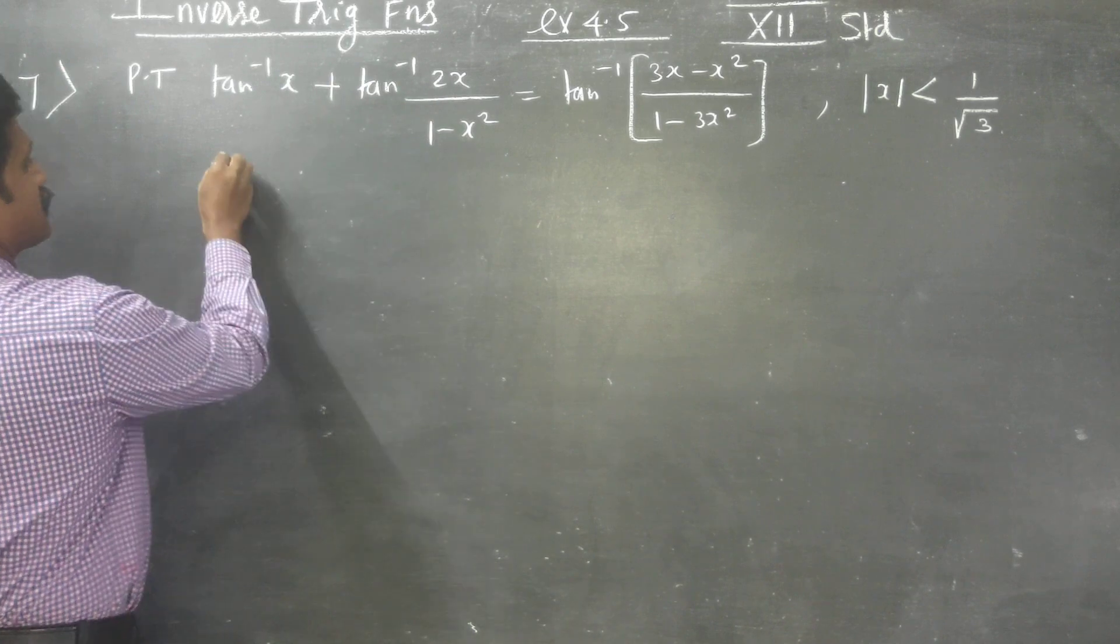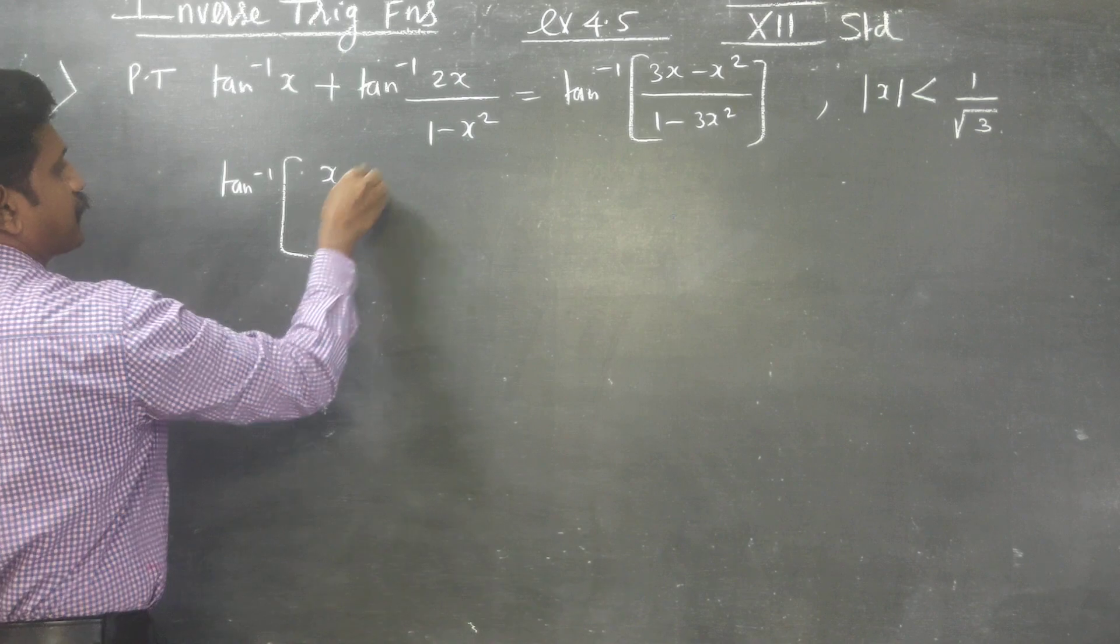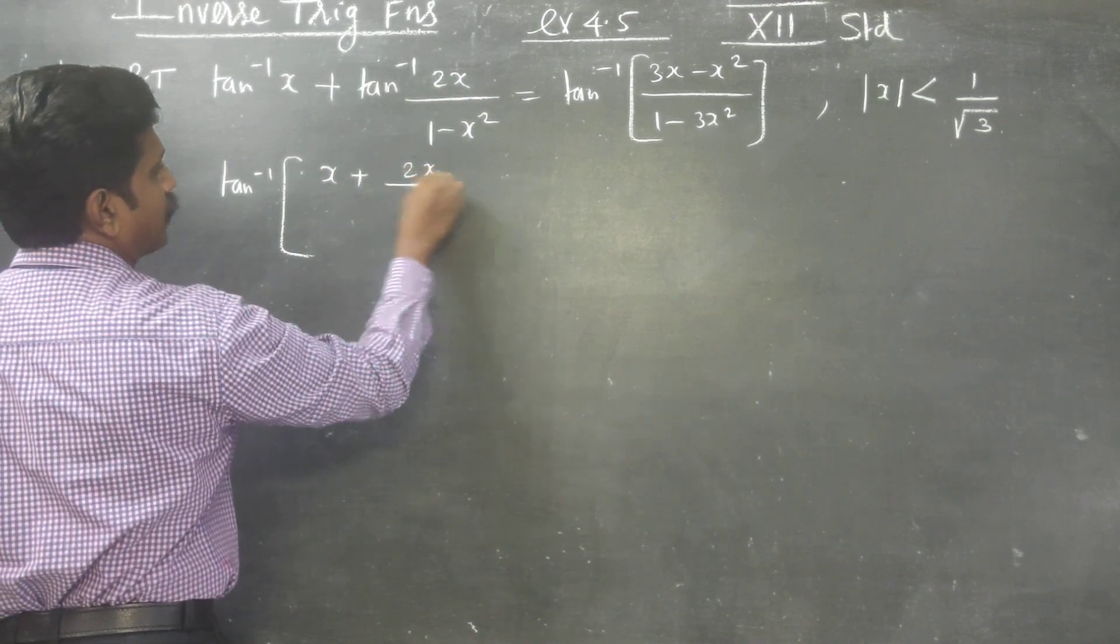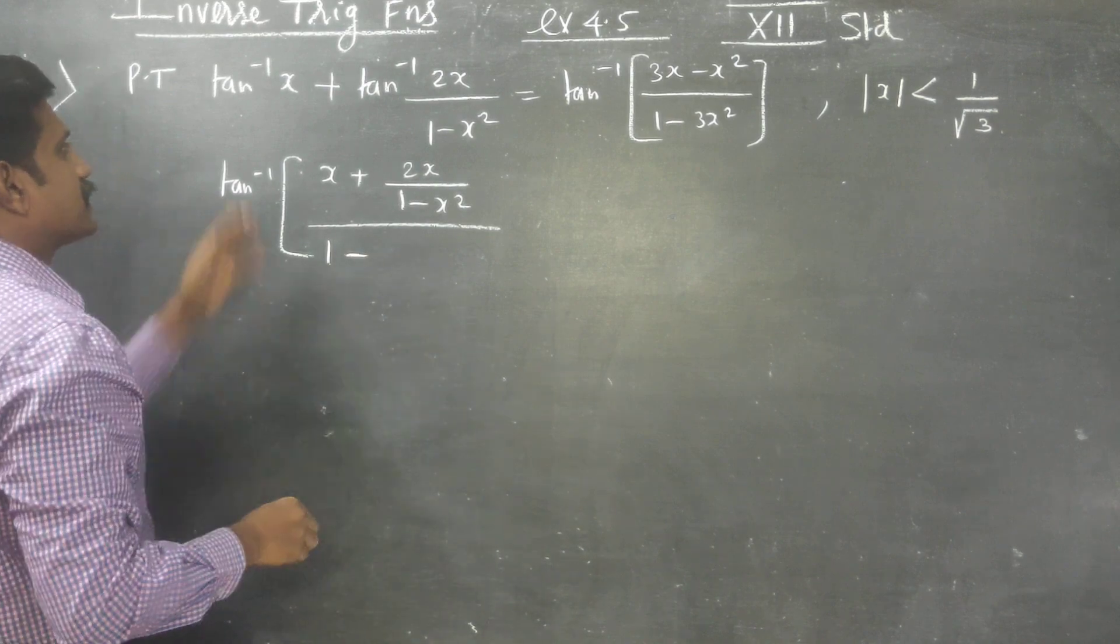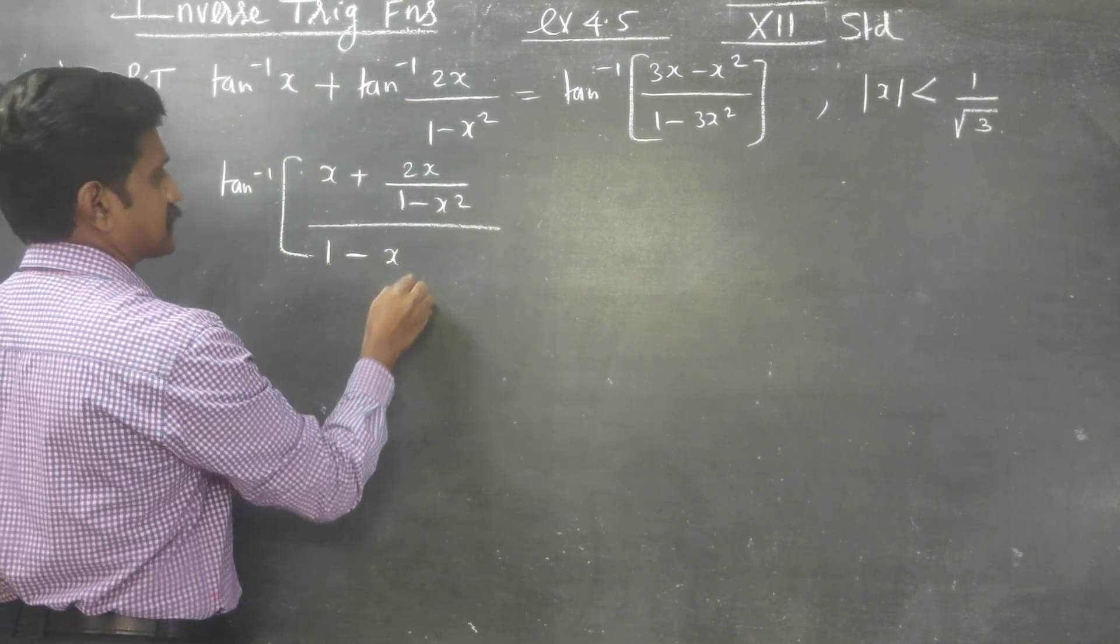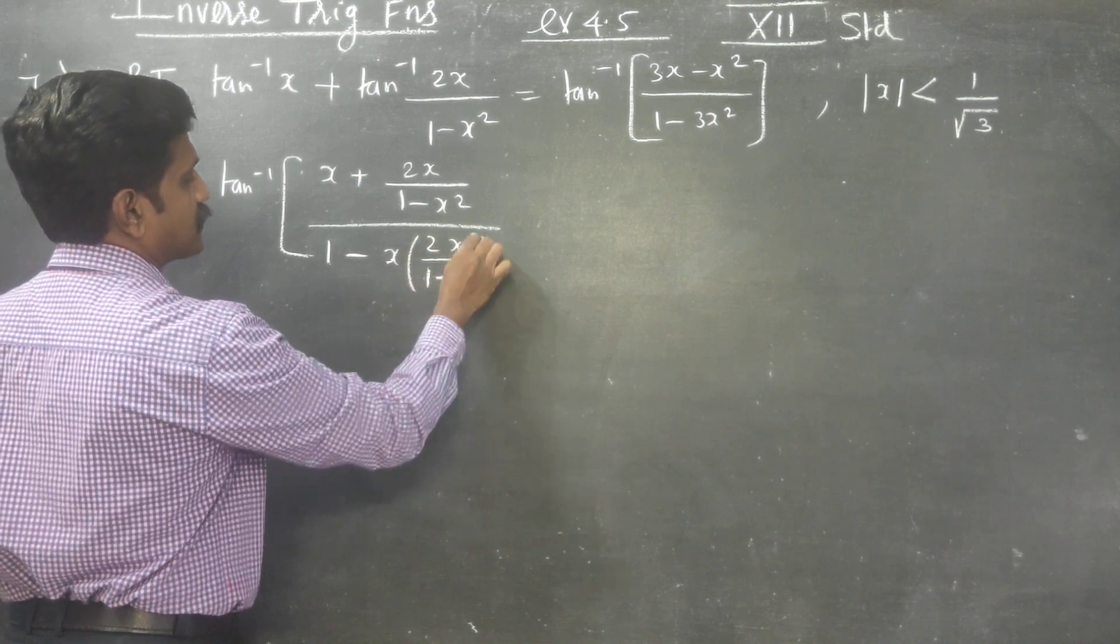Tan inverse of x plus tan inverse of y is tan inverse of x plus y, x plus 2x by 1 minus x square divided by 1 minus x into y, x into y, 2x by 1 minus x square.